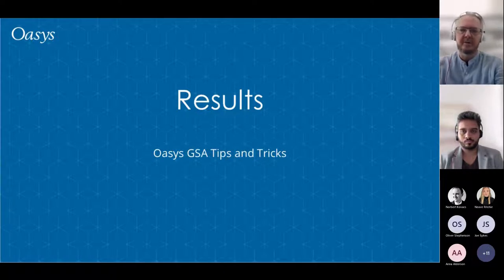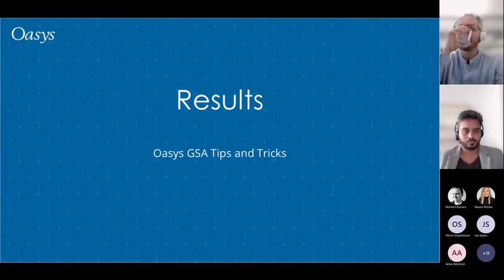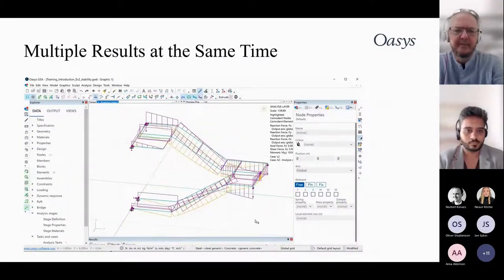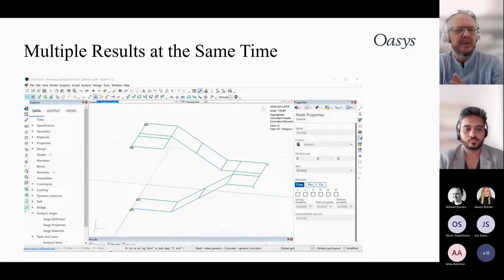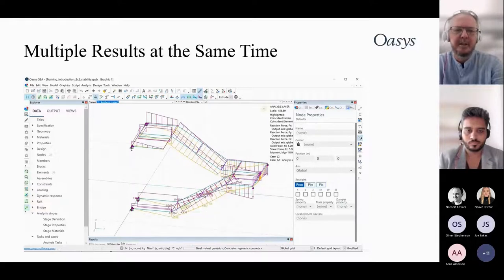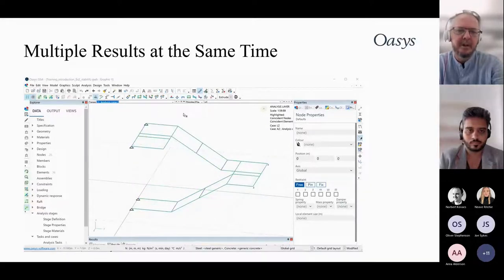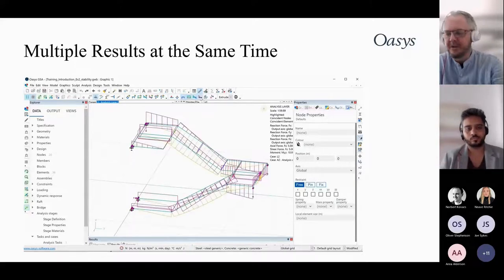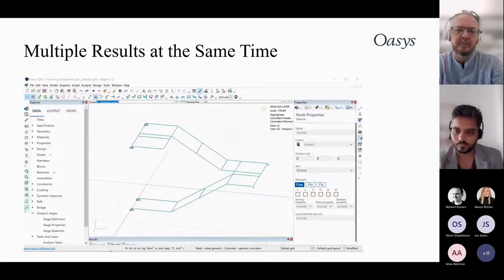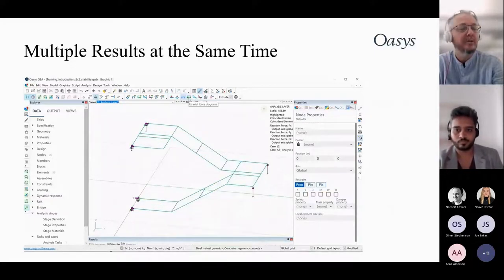GSA can show many different results on screen simultaneously. You can display reactions, axial loads, shear forces, and bending moments all at the same time and annotate them as needed. Only one contour can be shown at a time, but result diagrams have no such restriction.